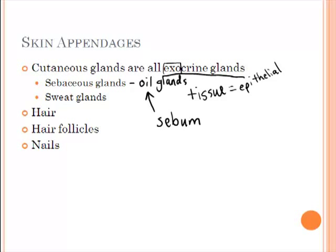Sweat glands are found throughout the body. There are two main types. The first are eccrine glands — these are the ones we usually associate with sweating when the body gets too hot, and they work to regulate body temperature. They also release salts and urea. The pH of the sweat, due to its acidity, also helps keep bacteria from growing.